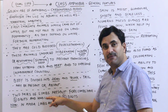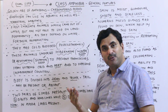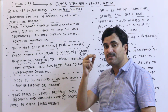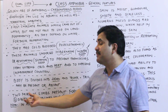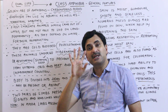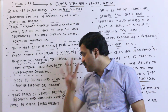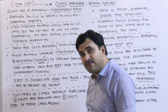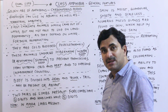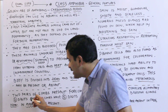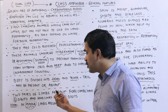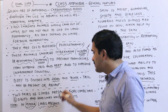Amphibians have two pairs of limbs — one pair of forelimbs and one pair of hindlimbs. The number of digits differs: forelimbs have four digits while hindlimbs have five digits. There are also a few members of Class Amphibia where limbs are completely absent, belonging to the order Apoda — 'a' meaning absent, 'poda' meaning legs.